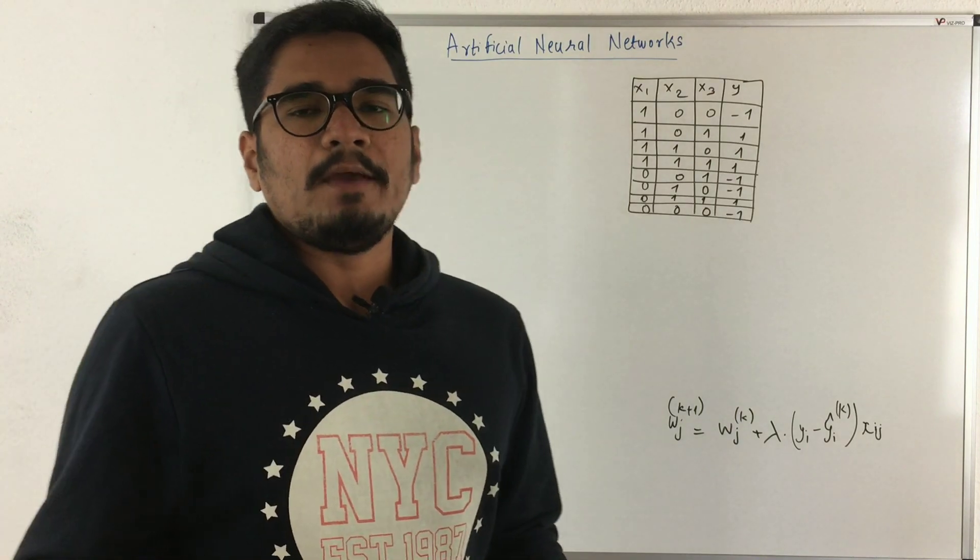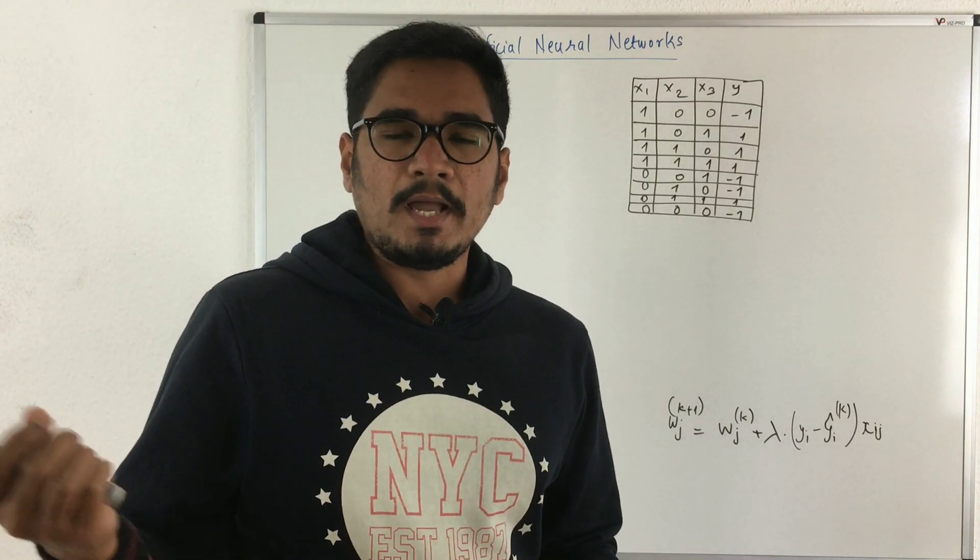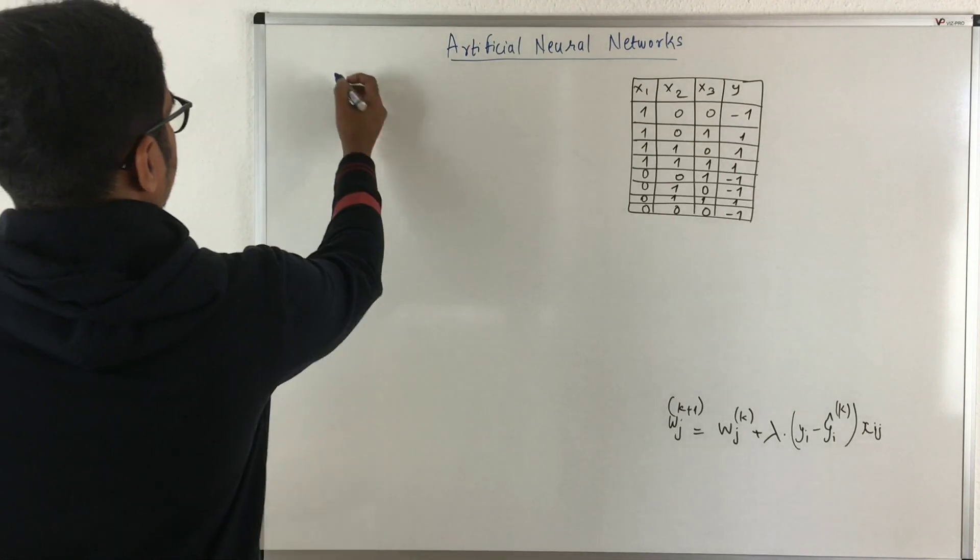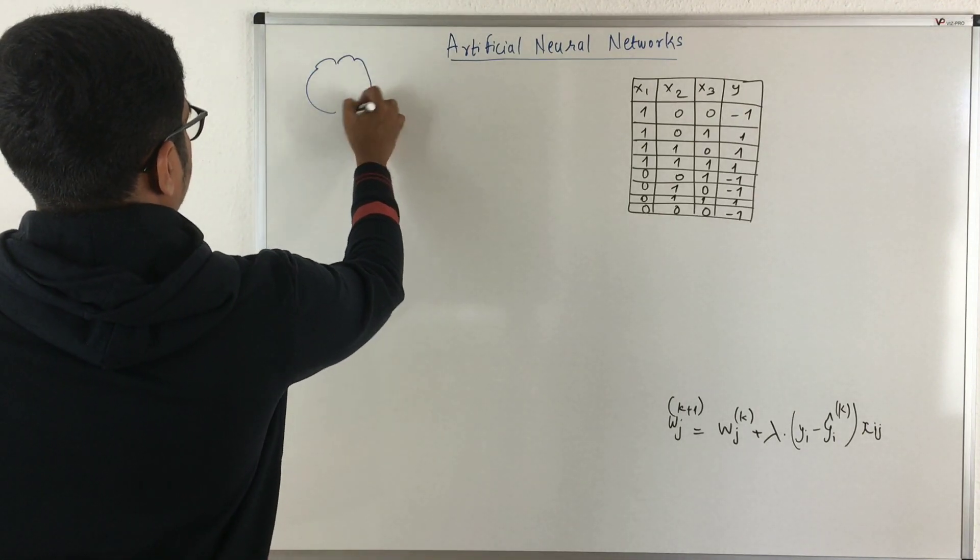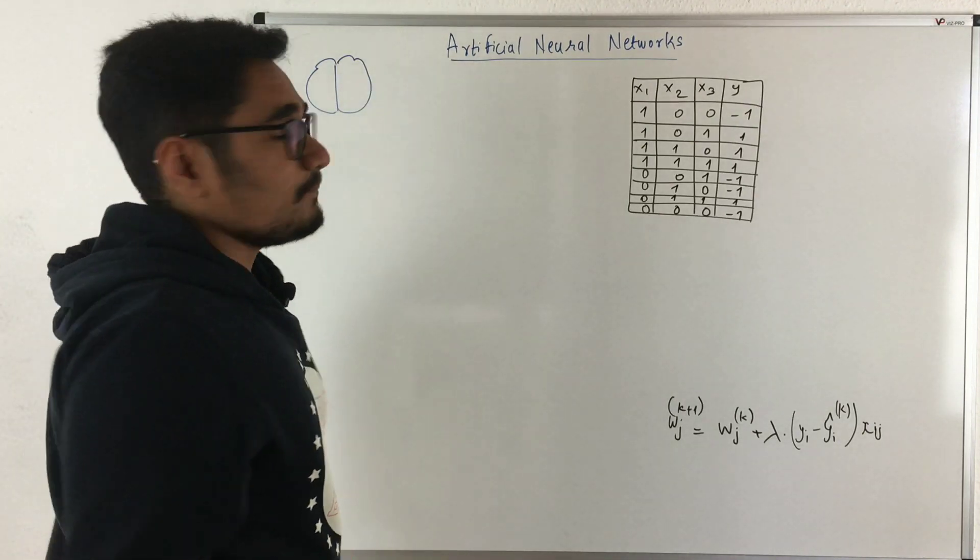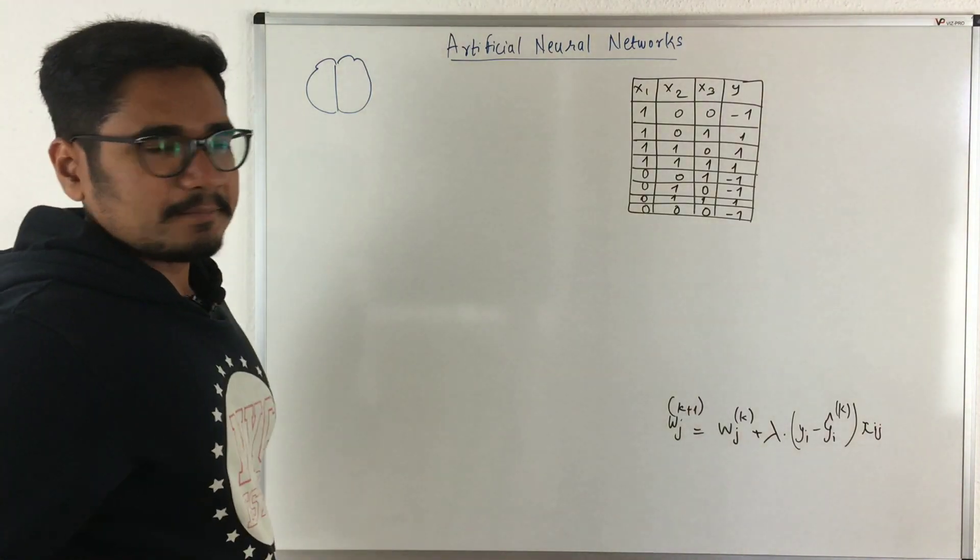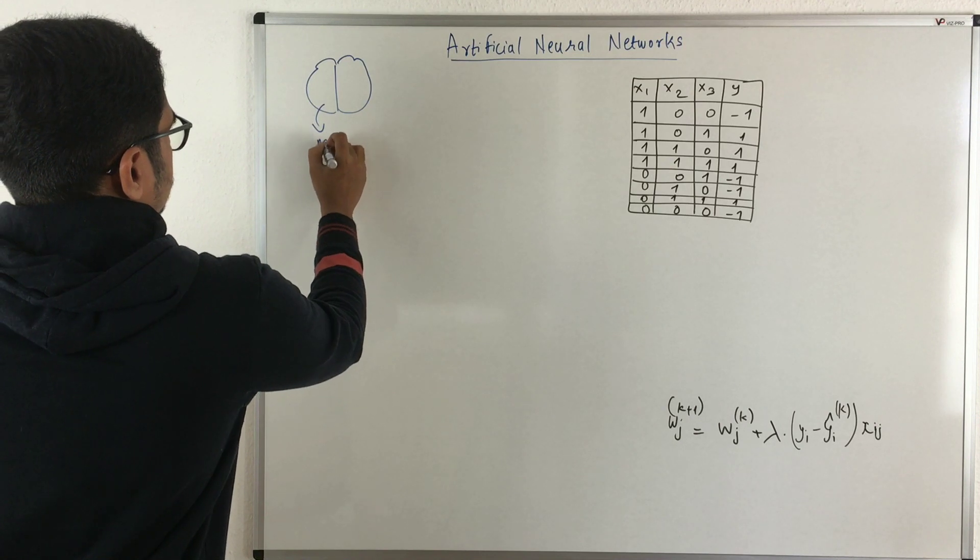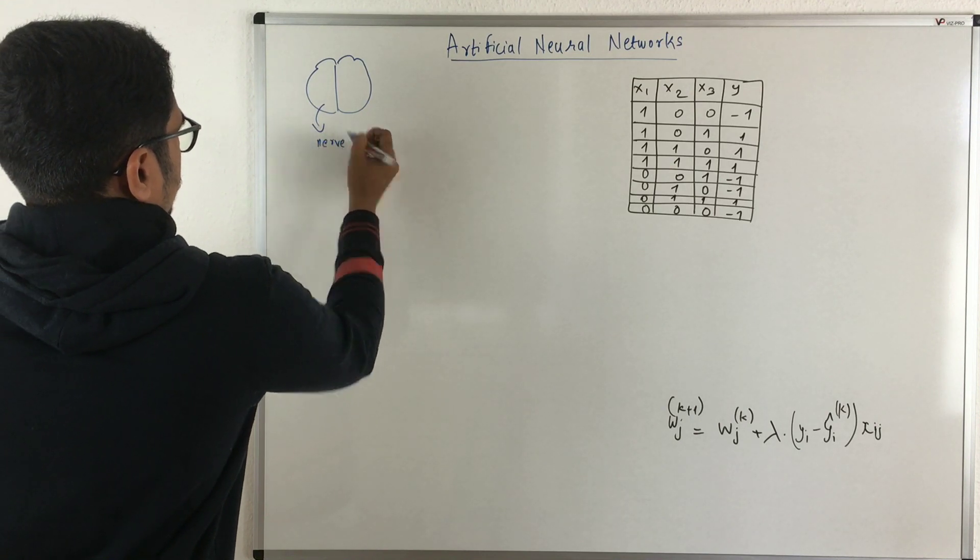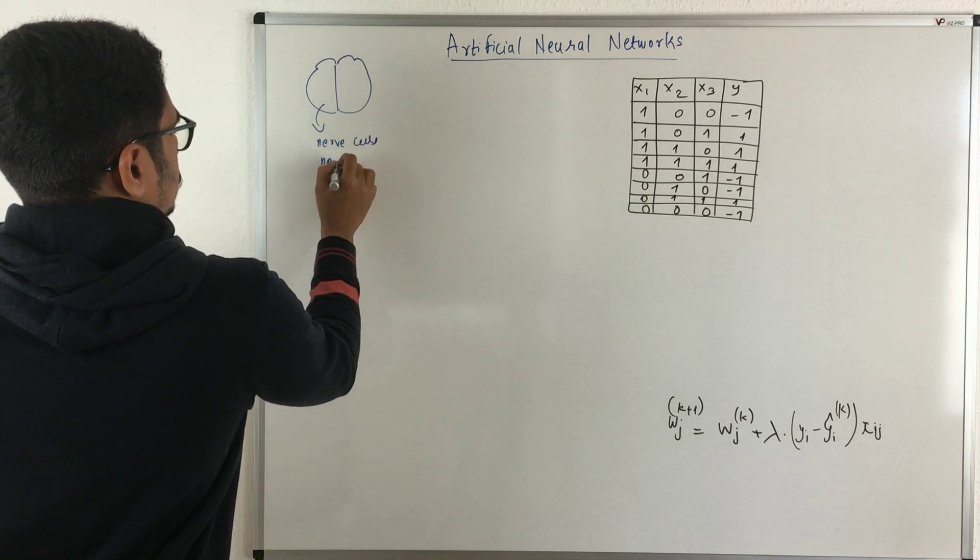Now I'll be briefing something about biology. Basically, the human brain - my drawing is not very good - this is the human brain, a rough idea of how it looks. And what it has is some nerve cells, which are called neurons.